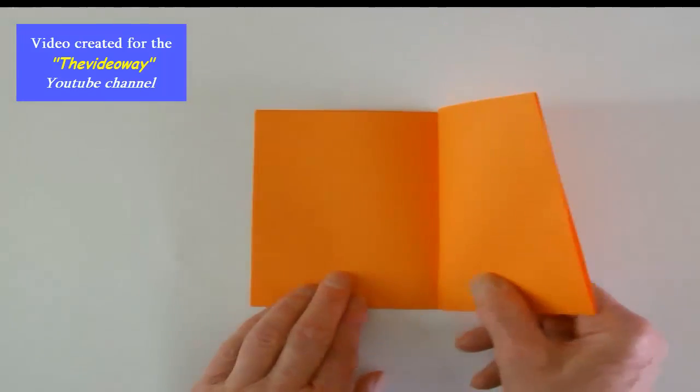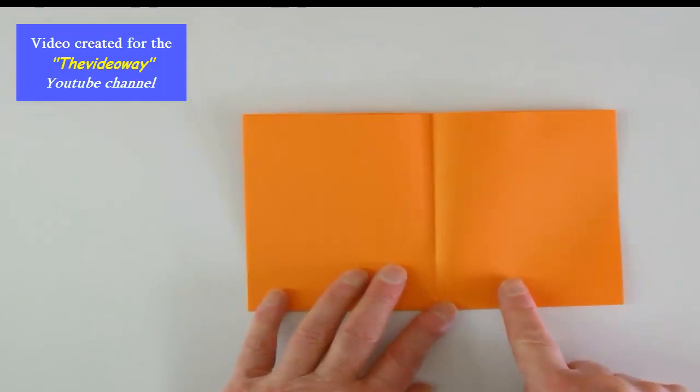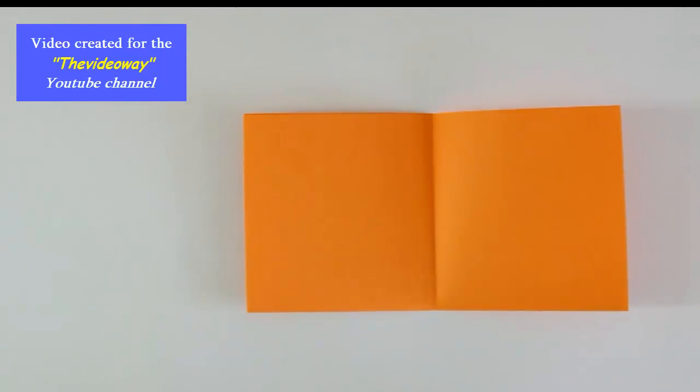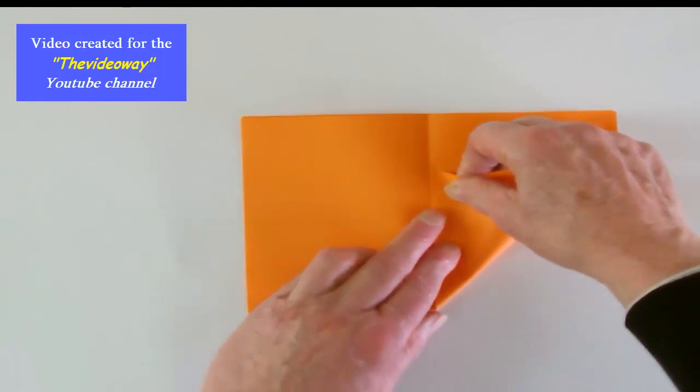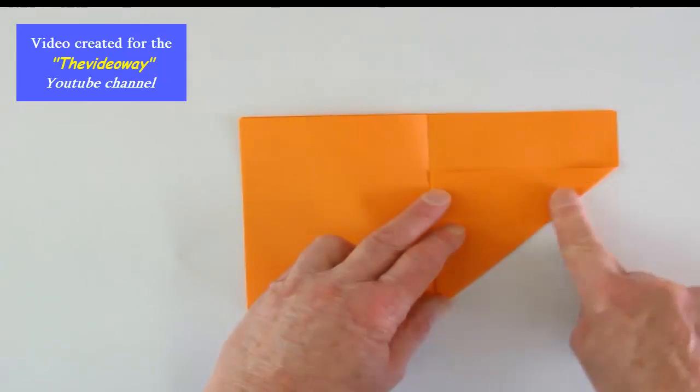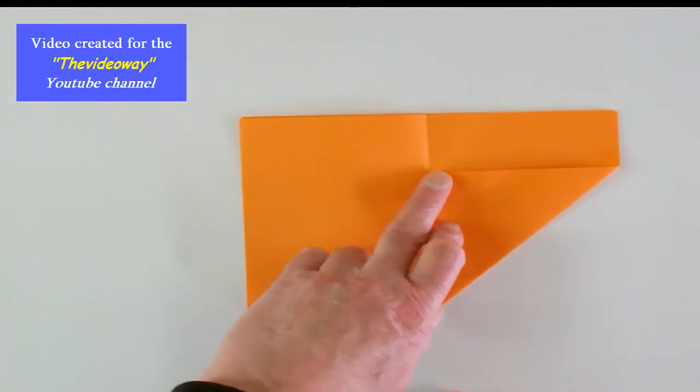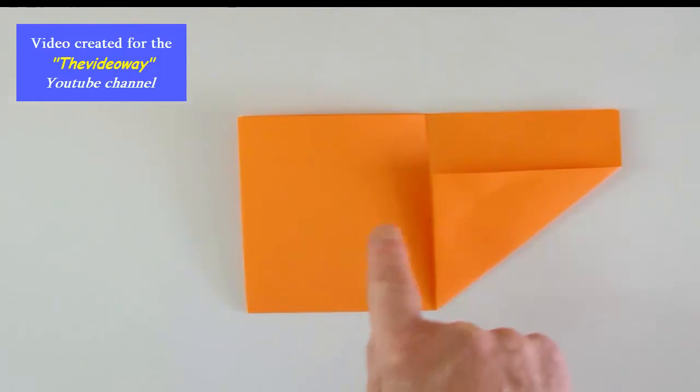Now open out and fold this corner to the central crease. Now do the same on this side.